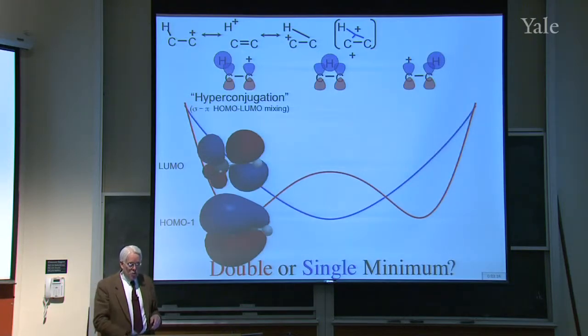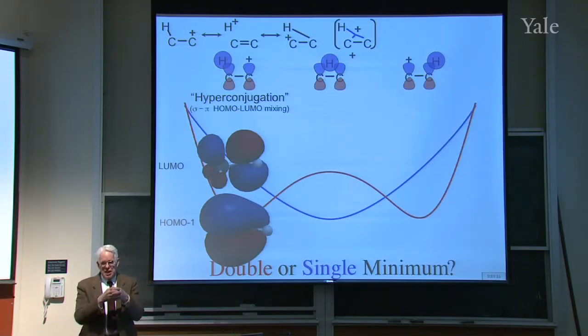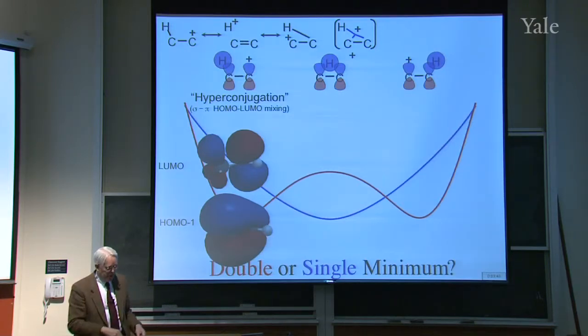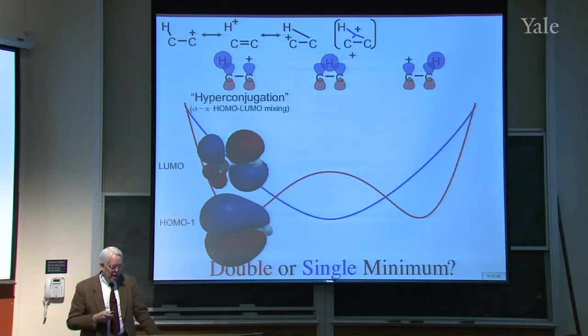That's one factor that makes highly substituted carbon cations stable. If you have a hydrogen next door, there's no way the electrons in that bond can mix with the vacant p orbital because they're orthogonal. But if you have a carbon and then a bond, the electrons can overlap. The more carbons you have attached, the more bonds whose electrons can be stabilized by mixing with the vacant orbital. So hyperconjugation is one reason more substituted cations are more stable.